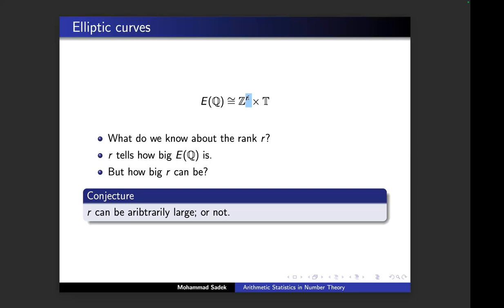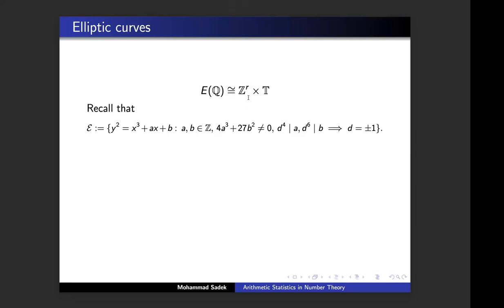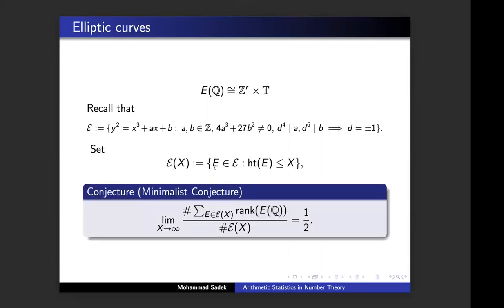Instead of talking about that conjecture — since we really don't have a specific belief — I'll talk about another conjecture we believe more in. I'll start with the set of small elliptic curves. I'm interested in elliptic curves with size bounded by x. This is the minimalist conjecture, which all number theorists believe in. You consider all elliptic curves up to a certain height, find the rank of every single one, add them up, average by the number of elliptic curves, take the limit as x goes to infinity, and this conjecture says the limit equals 1/2.